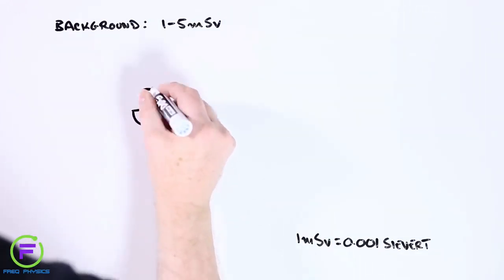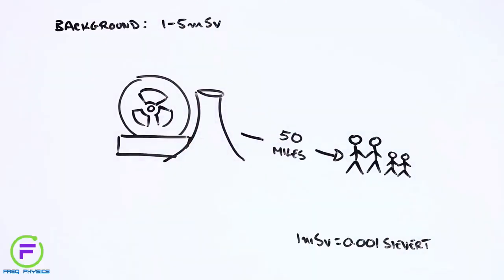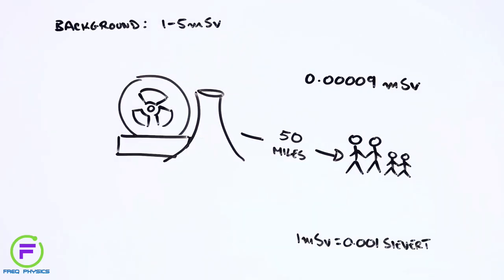And if you live within 50 miles of a safely functioning nuclear power plant, you can expect to be exposed to a minuscule 90 billionths of a sievert, which coincidentally is less than if you're living the same distance from a coal-fired power plant.